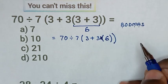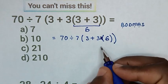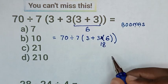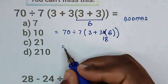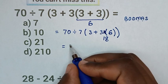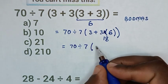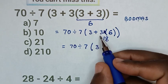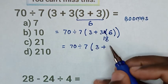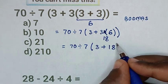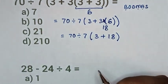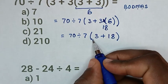3 times 6 is 18. Then it will be equal to 70 divided by 7, then bracket 3 plus this 3 times 6 is 18, so it will be 18.